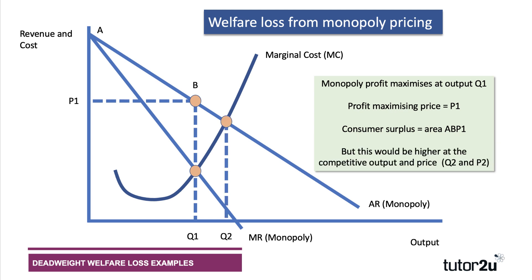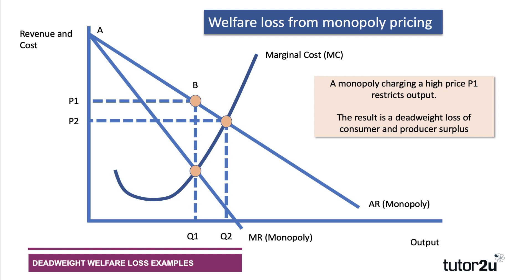The monopoly output is Q1 and the price is P1. The price will be lower and the output higher at a competitive market position. The competitive equilibrium is where marginal cost meets average revenue, or demand meets supply — that's output Q2 and price P2. So contrasting monopoly with competition: under monopoly, price is higher and output is lower than it would be under a competitive position.